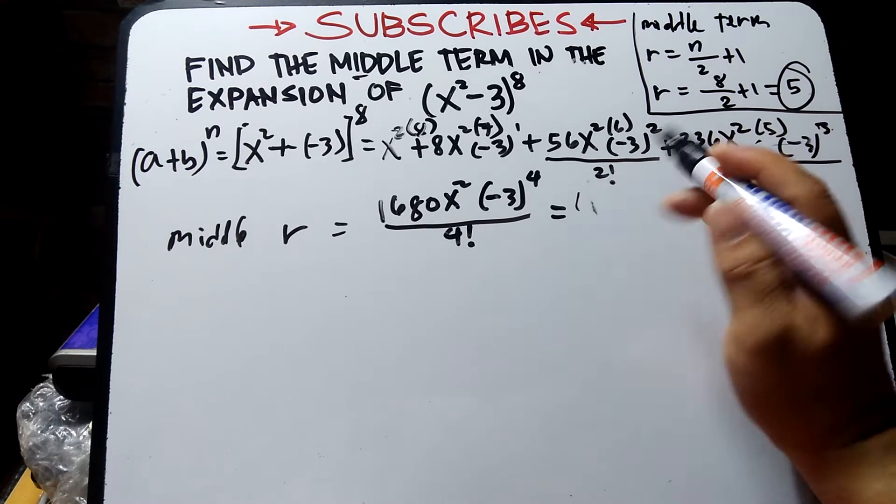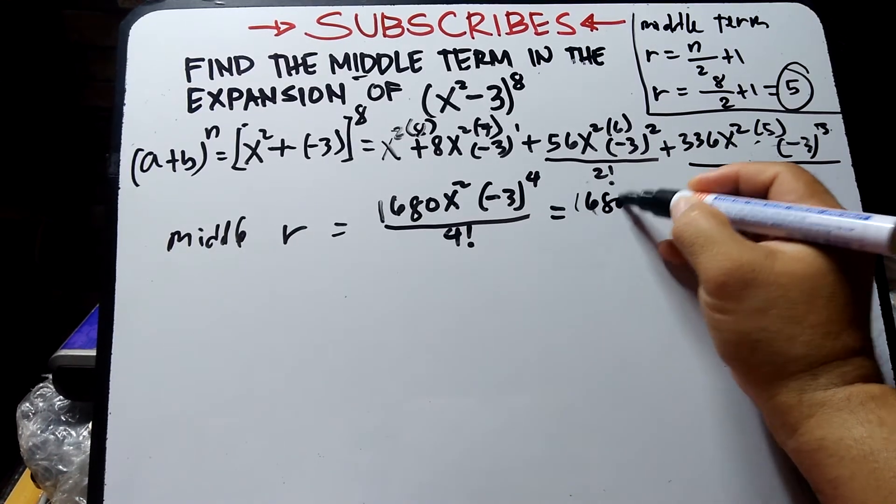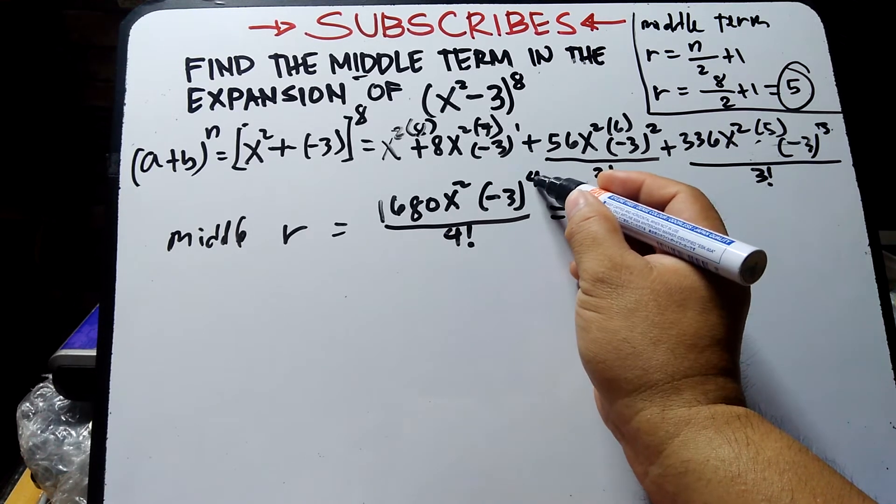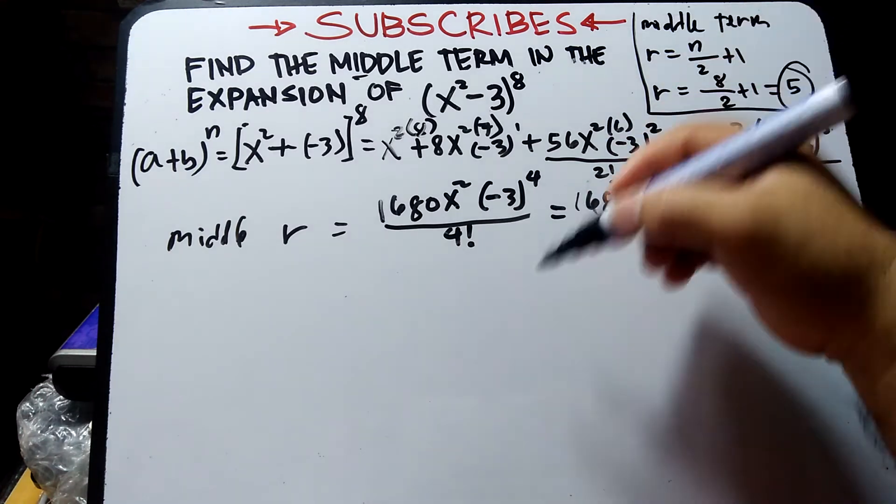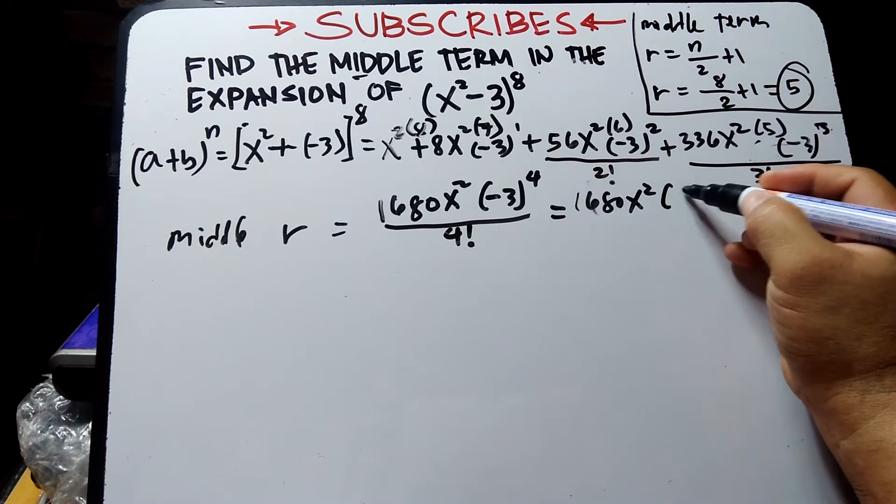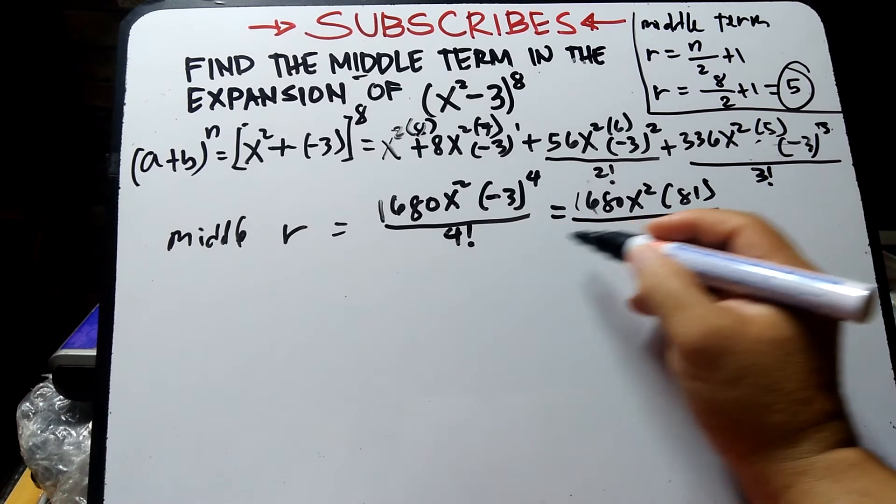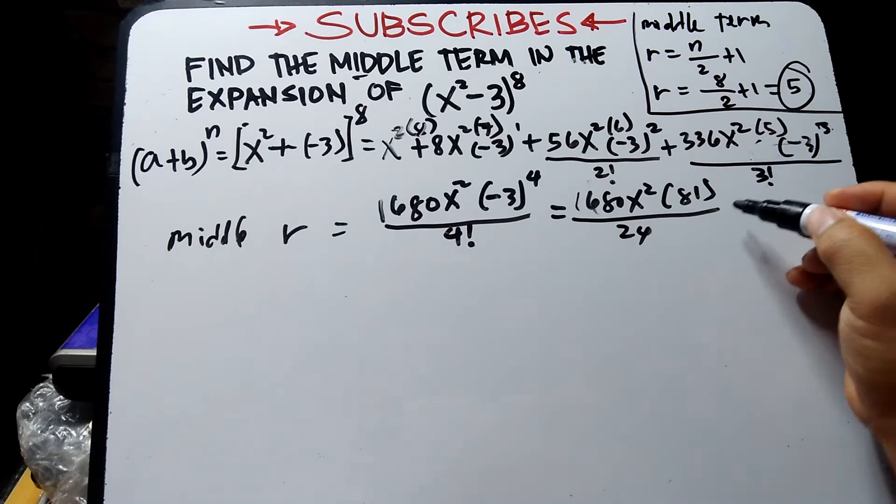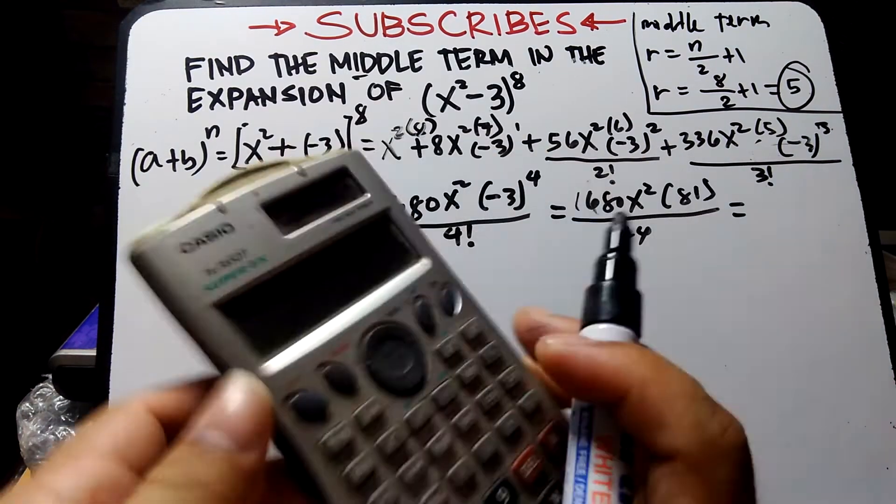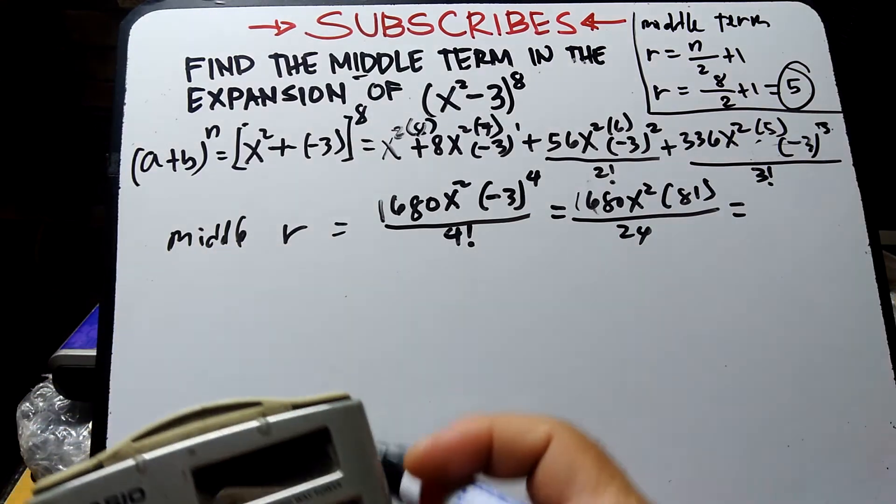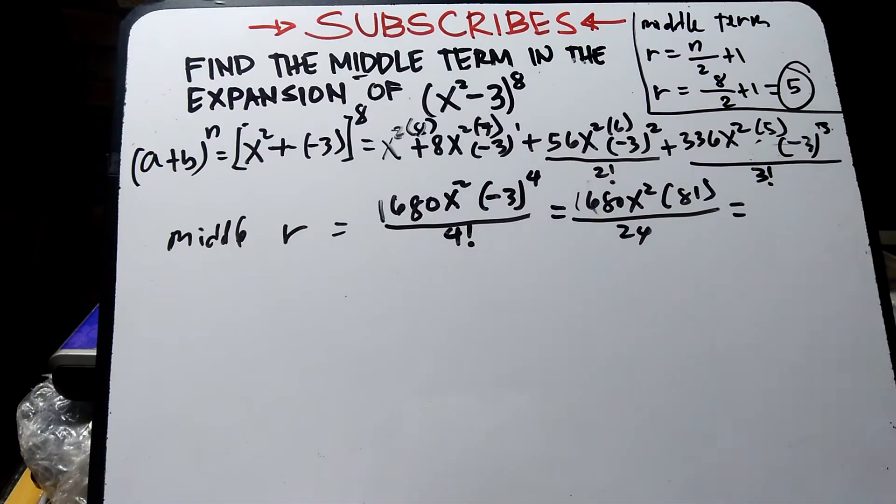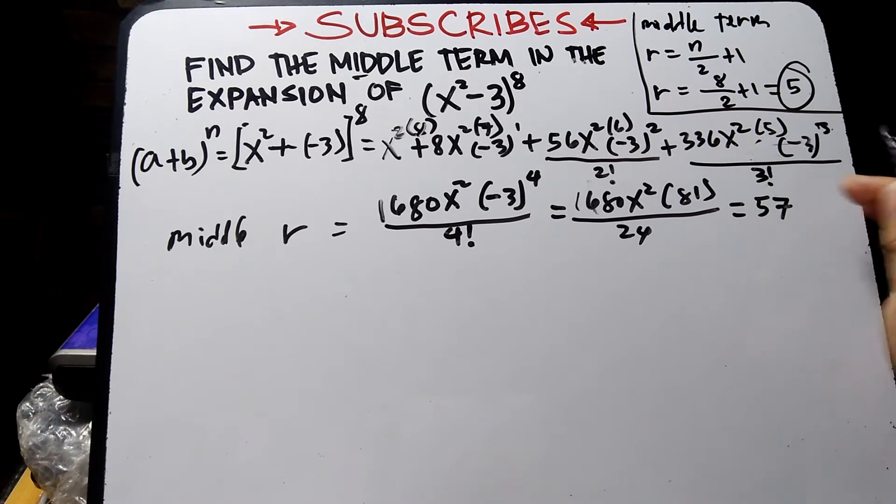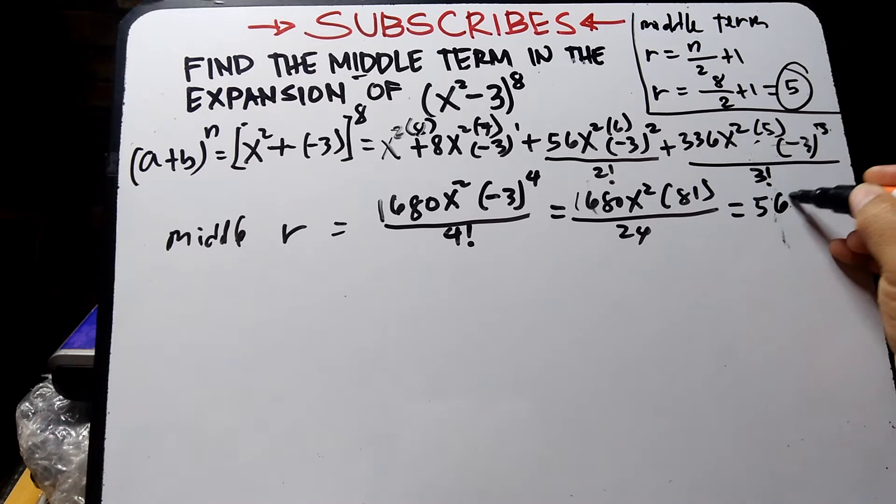So 1680 multiply this by 4 exponent, and the exponent is even so therefore positive. 3 times 3 times 3 times 3 becomes 81. Then 4 factorial is 24: 1 times 2 times 3 times 4 equals 24. Using calculator: 81 times 1680 divided by 24 equals 5670.